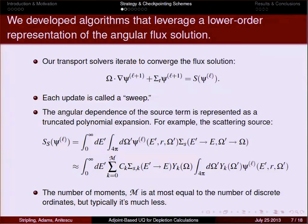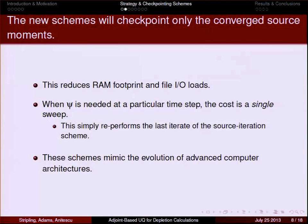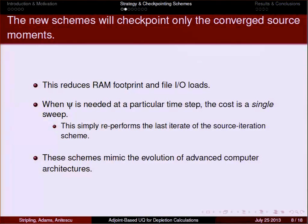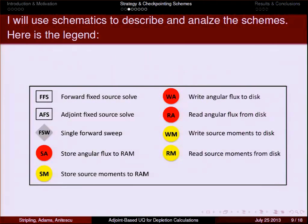We save psi in terms of an expansion that, after sufficiently many terms, converges to the true angular dependence. That's what we leverage for the new checkpointing schemes. The new schemes checkpoint — that is, write to file, store to RAM, and read from file — these converged source moments, or the coefficients of the polynomial expansion, instead of the full angular flux vector. This reduces the RAM footprint and file IO loads, because the number of moments used to represent the angular dependence is typically much less than the number of angles. The cost is that when we need the full angular flux vector psi to compute a term in the adjoint equation, the cost is a full sweep — a repeat of the last source iteration step. So we're paying flops for less memory and IO, which aligns with where architectures are heading.